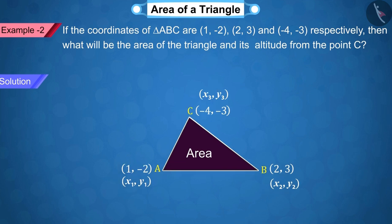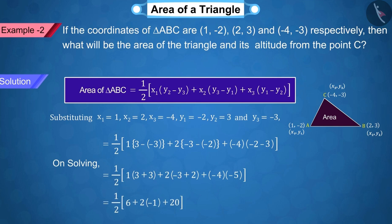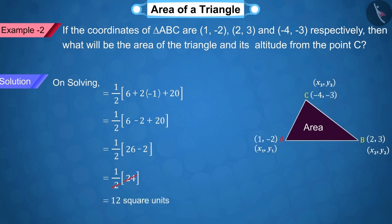Correct! Substituting all these values in the formula of the area of a triangle. On solving, we get the area of triangle ABC as 12 square units, which is represented by equation 1, because we have found the area of this triangle.